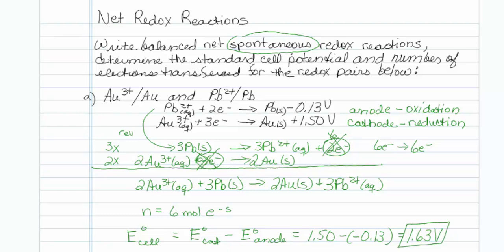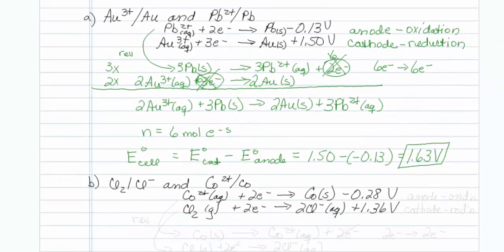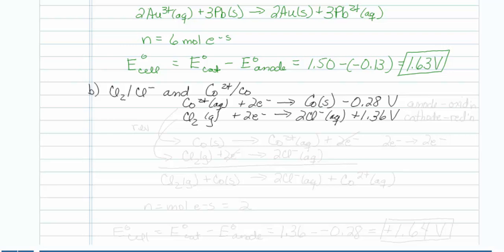Let me do the next example. I have chlorine/chloride and cobalt two plus/cobalt. Once again, remember that the more positive one is the cathode and that corresponds to reduction. The more negative one is the anode, and oxidation occurs there.